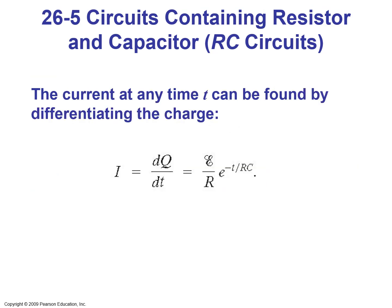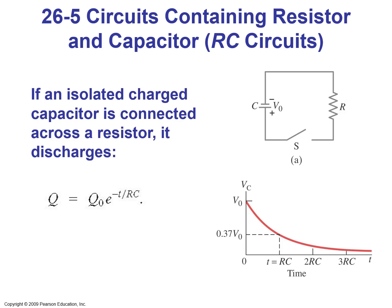The current at any time T can be found by differentiating the charge: I equals DQ over DT, which equals EMF over R times e to the power of minus T over RC. If an isolated charged capacitor is connected across a resistor, it discharges. The rate of discharge from the capacitor in an RC circuit is Q0 times e to the power of minus T over RC, and the voltage drops exponentially over time.